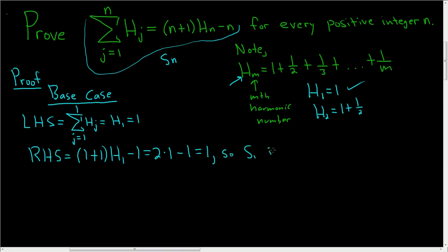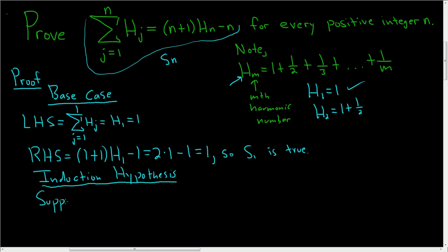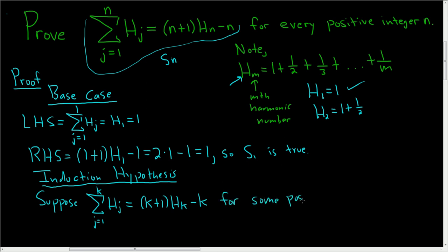So s sub 1 is in fact true. The next step is the induction hypothesis. This is the step where we suppose that our statement is true for some positive integer k — suppose the statement is true when n equals k. We replace all n's with k, giving the sum as j runs from 1 to k of h sub j equals (k plus 1) times h sub k minus k, and we assume this is true for some positive integer k.